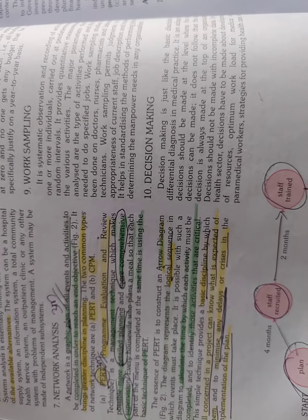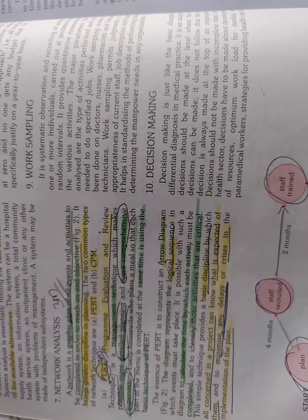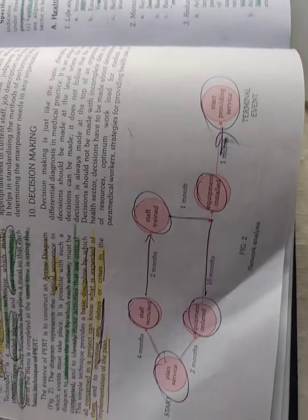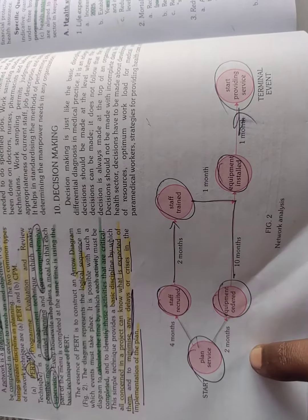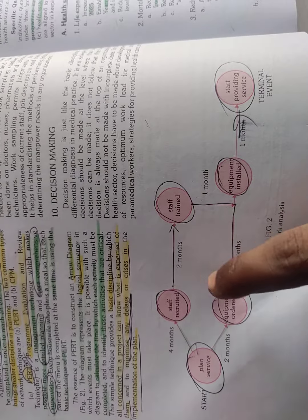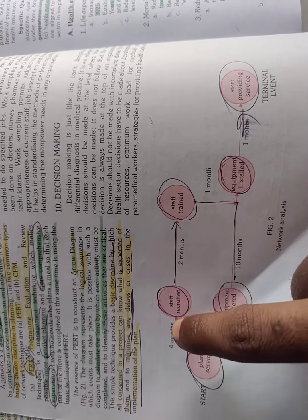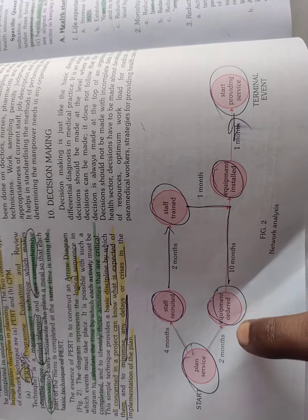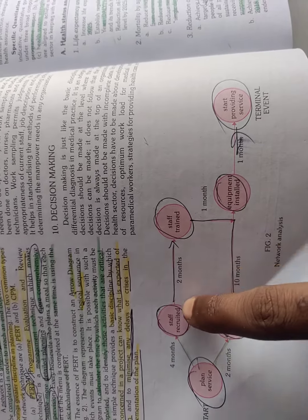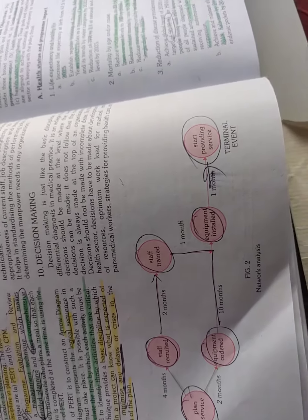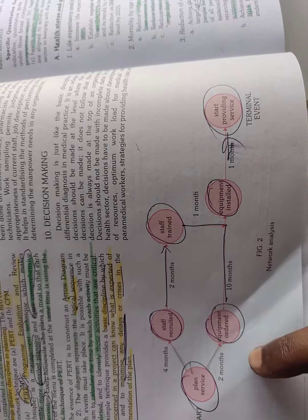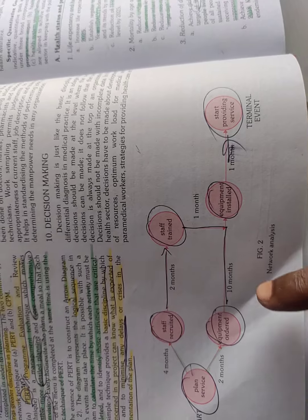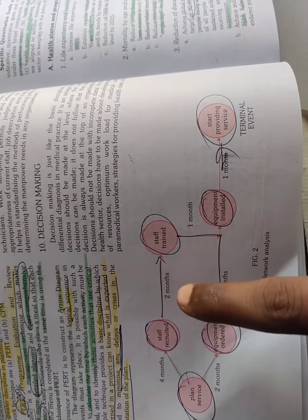In case of PERT, Program Evaluation Review Technique, the important thing is planning and organizing. For example, to arrange the staff takes four months, for equipments it takes two months, for staff training it takes two months, and for installation it takes ten months. This time with arrow marking - that's PERT, Program Evaluation Review Technique with arrow marks and timing.